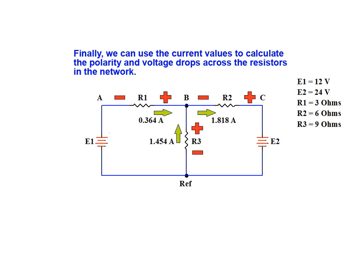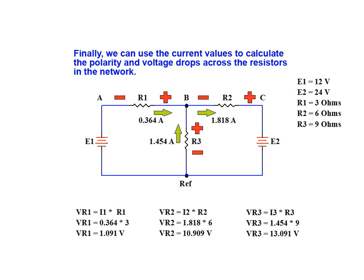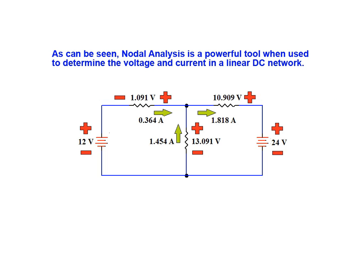We can now mark the polarity of the resistors according to our confirmed current directions. We then use Ohm's law to calculate the voltage drop across each resistor using the calculated currents and known resistance values. The voltage drop across R1 is 1.091 volts, across R2 we have 10.909 volts, and across R3 we have 13.091 volts. As can be seen, nodal analysis is a powerful tool that can be used to determine voltages and currents in a linear DC network.